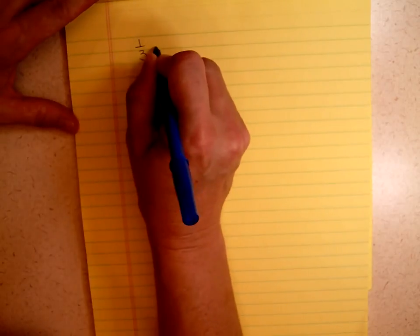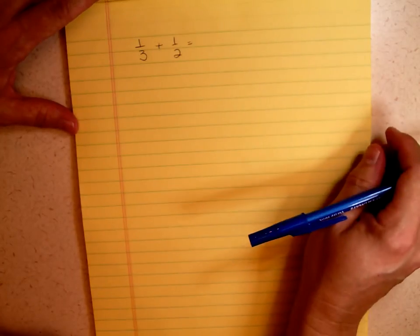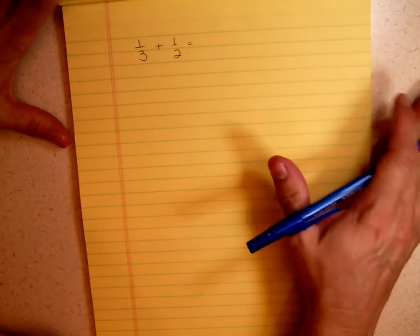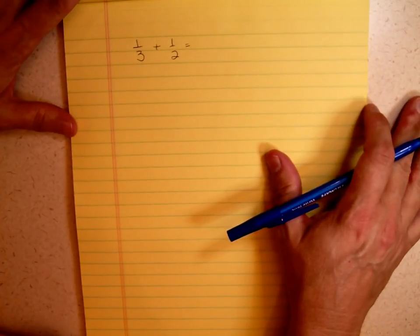Let's take a fraction like one-third and say that we want to add one-half to it. There are several different ways that you can figure out how to add those together, but today I'm going to show you what I tell my students is the alternate algorithm.